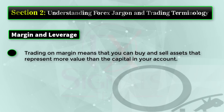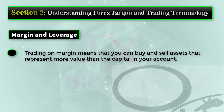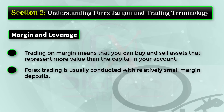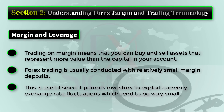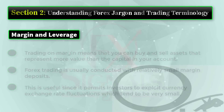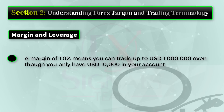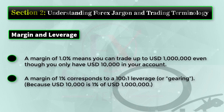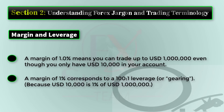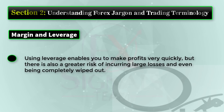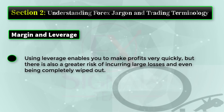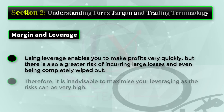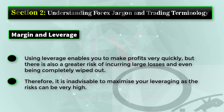Margin and leverage: trading on margin means that you can buy and sell assets that represent more value than the capital in your account. Forex trading is usually conducted with relatively small margin deposits, which permits investors to exploit currency exchange rate fluctuations that tend to be very small. A margin of 1.0% means you can trade up to one million US dollars even though you only have $10,000 in your account. A margin of one percent corresponds to 100:1 leverage. Using leverage enables you to make profits very quickly, but there is also greater risk of large losses and even being completely wiped out. It is inadvisable to maximize your leveraging as the risks can be very high.